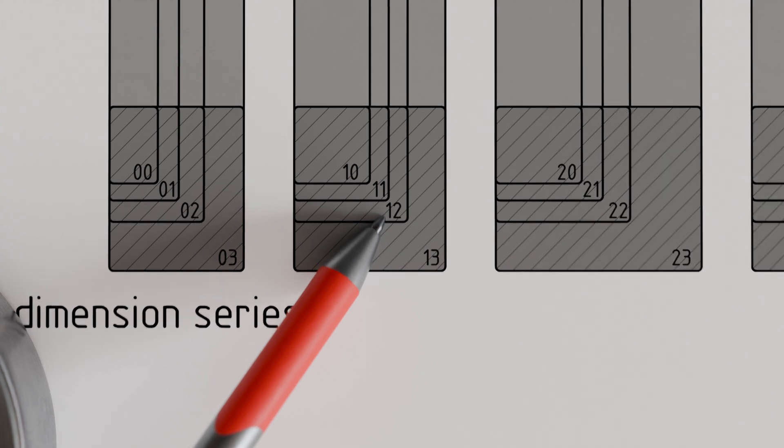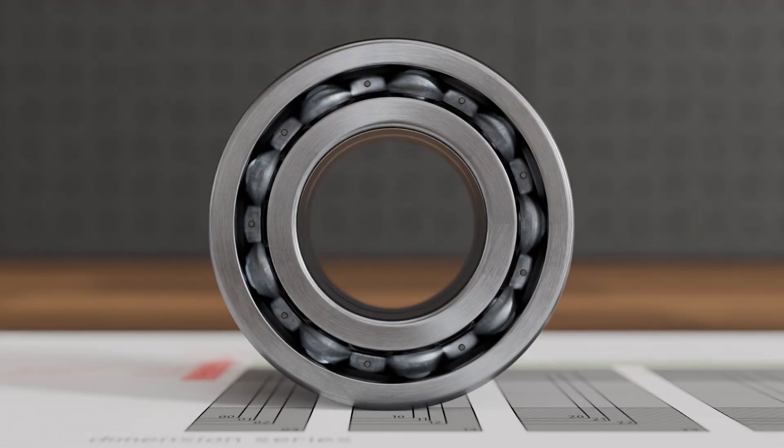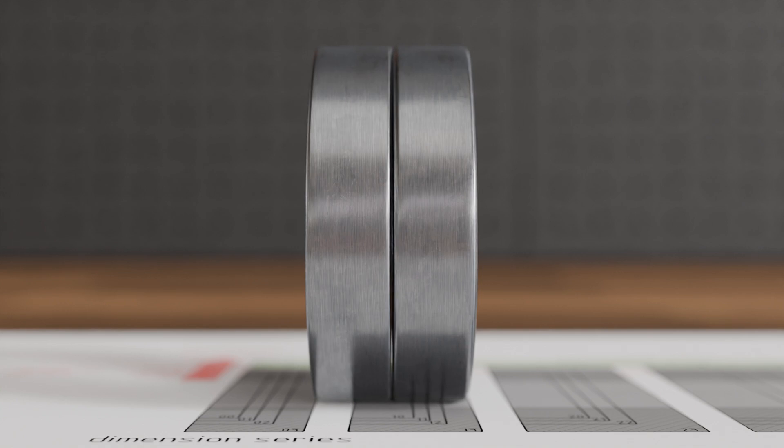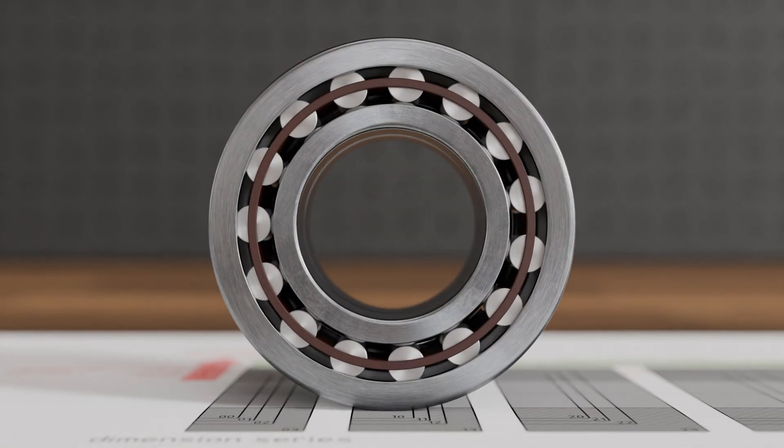For example, a deep groove ball bearing of dimension series 12 can easily be replaced by a cylindrical roller bearing of the same dimension series 12, as it has the same main dimensions.